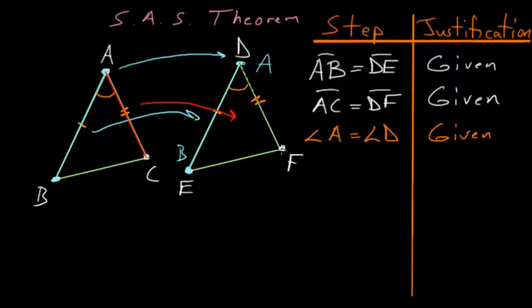And we also know that this point C here will lie exactly on this point F, because AC and DF are the exact same lengths. So now we can label this point as C as well, since it is now resting on top of F.